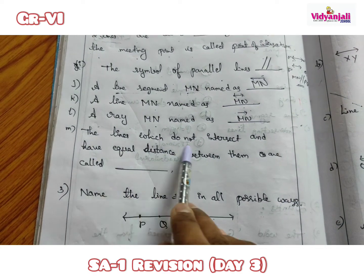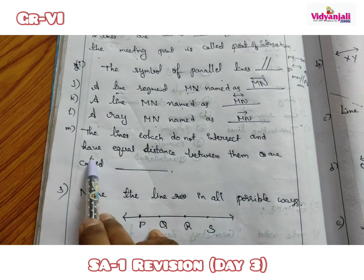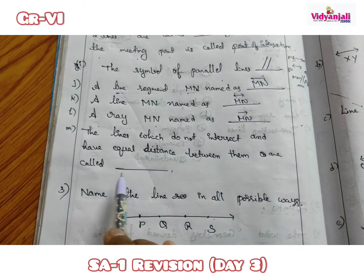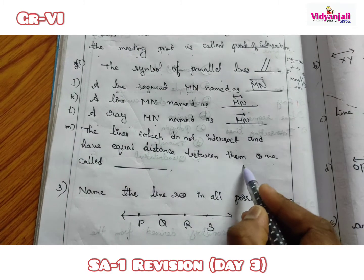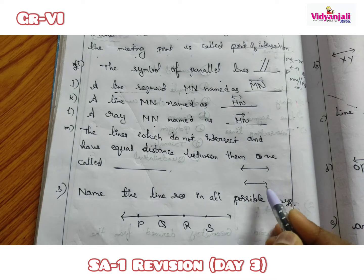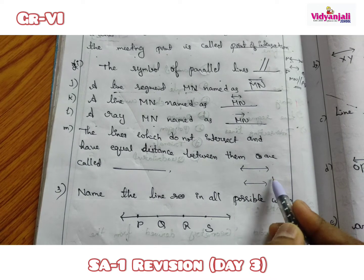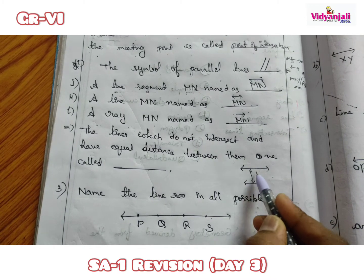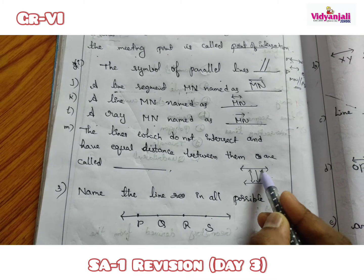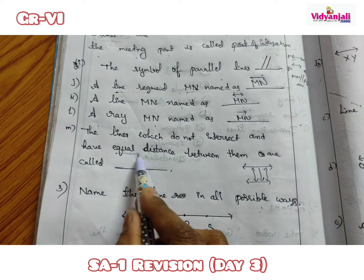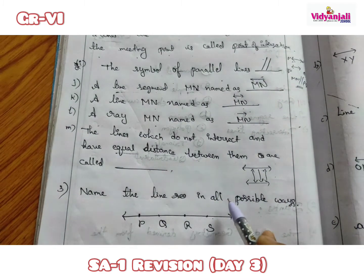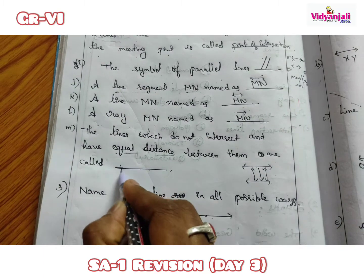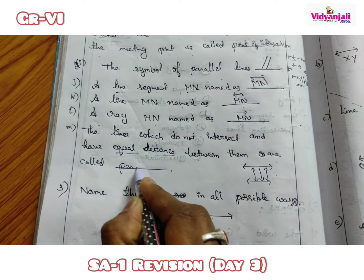Lines which do not intersect and have equal distance between them at every point are called parallel lines. If two lines never meet and the distance between them is always equal, we call them parallel lines.